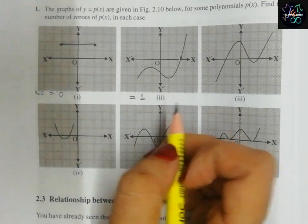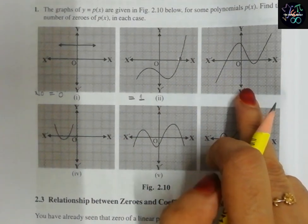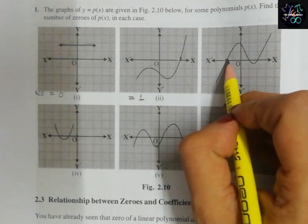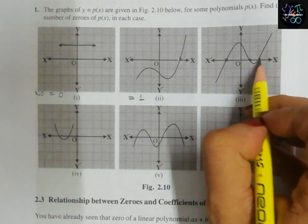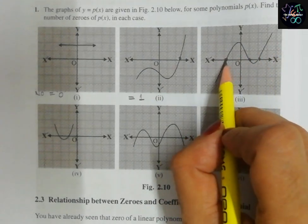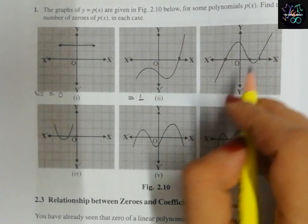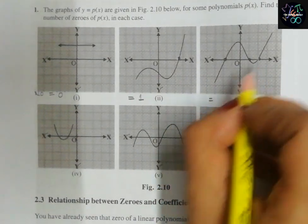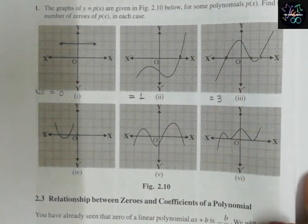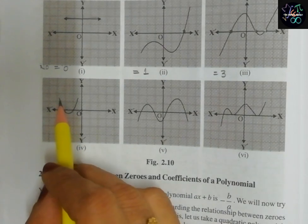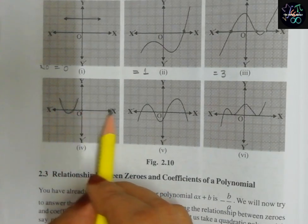In the third graph, the graph intersects the x-axis at one, two, and three points. So the number of zeros is equal to three.